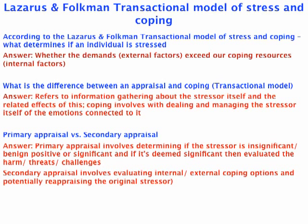In a secondary appraisal, we're looking at what internal coping mechanisms we have. If we've dealt with this type of problem before, we also evaluate our external coping options — who can we turn to? Someone we have an existing relationship with, or perhaps someone we don't have an existing relationship with who might be able to help us. Once we've done that, we might reappraise the actual harm and threats that we originally identified from the primary appraisal.